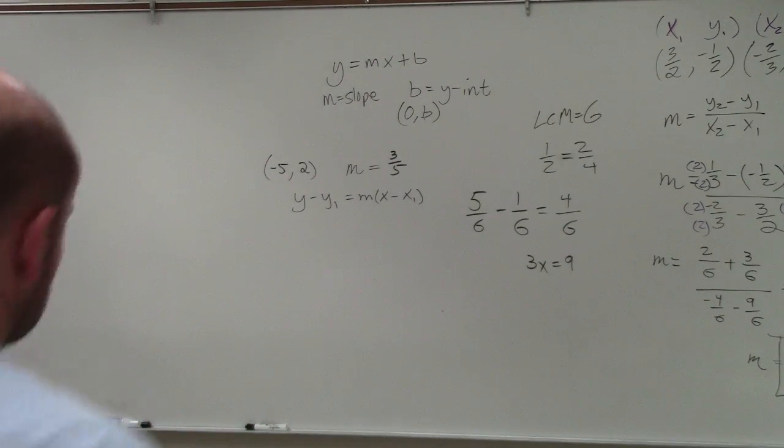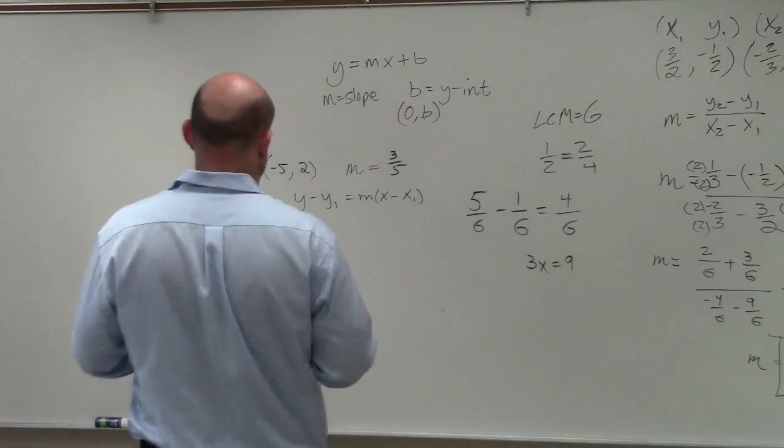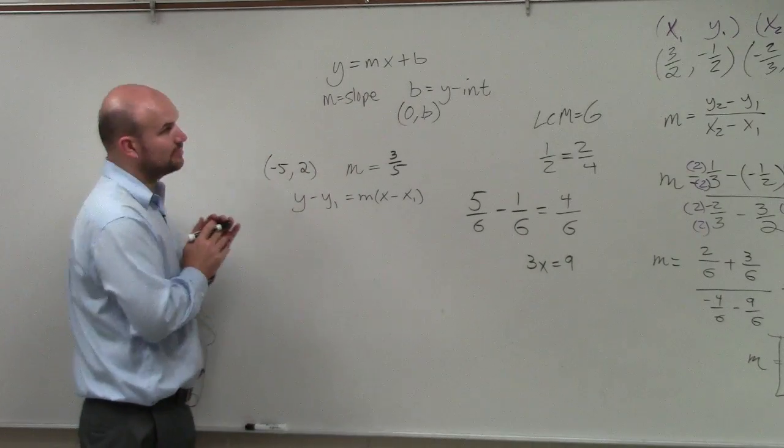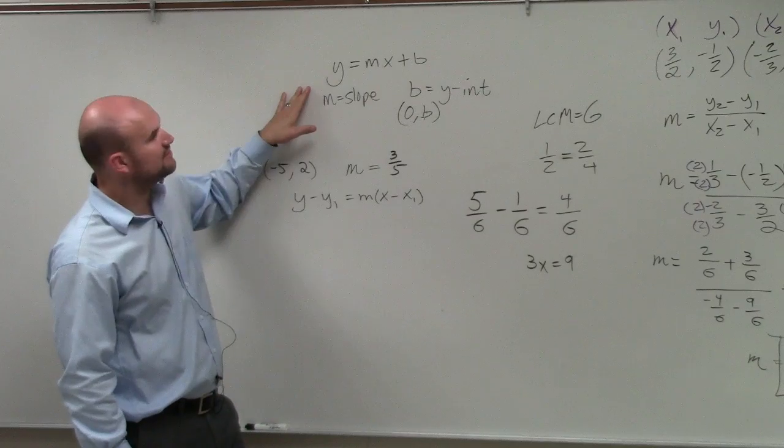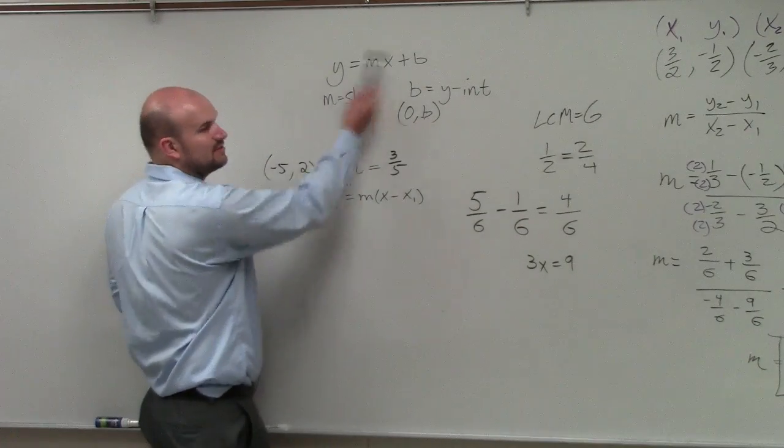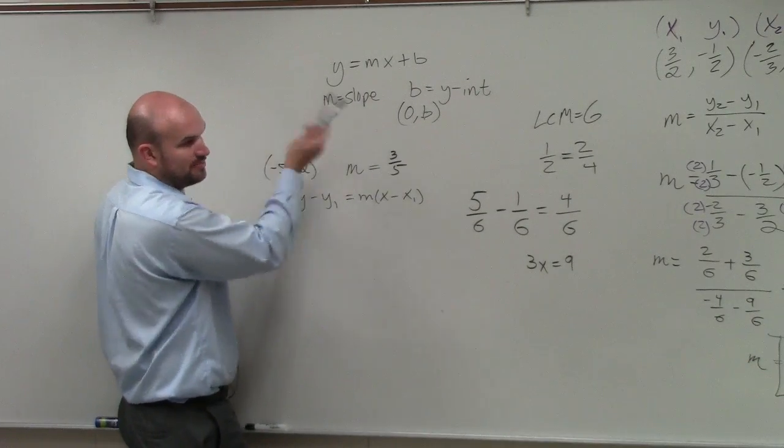OK. So ladies and gentlemen, in this case, we have a point and we're given a slope. Now, in previous times, to write the equation of a line, we used y equals mx plus b, right? Where m is the slope and b is the y-intercept.